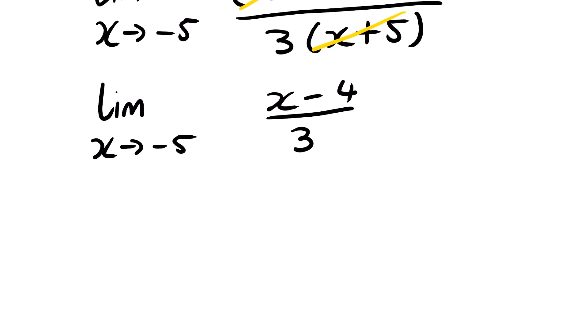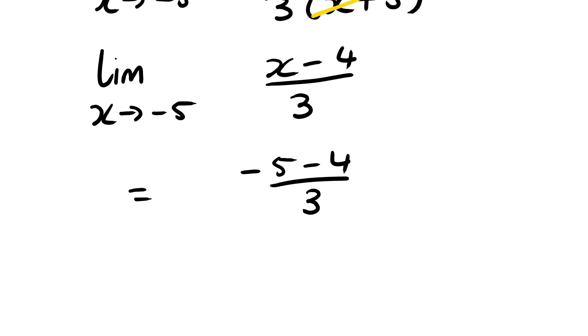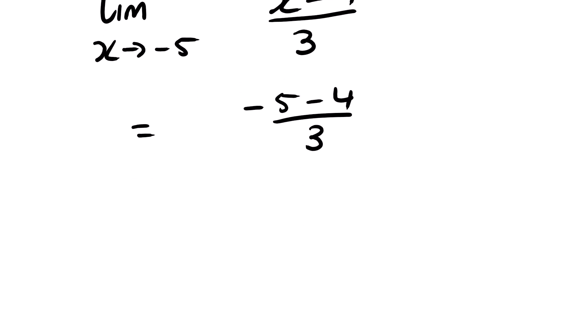From here we can substitute: negative 5 minus 4, all over 3. Then our answer is negative 9 over 3, which simplifies to negative 3.